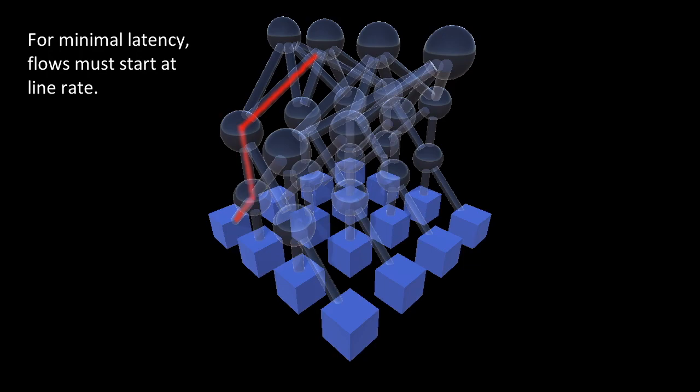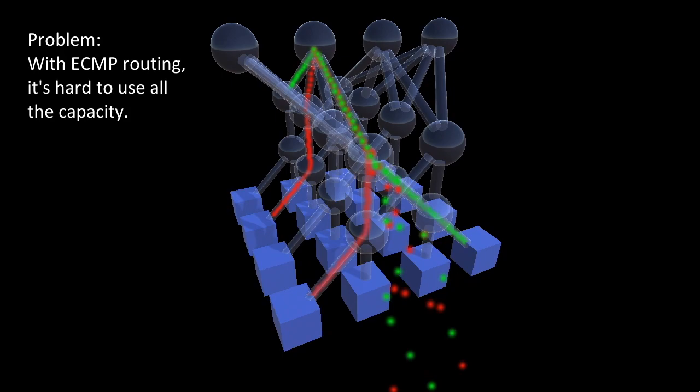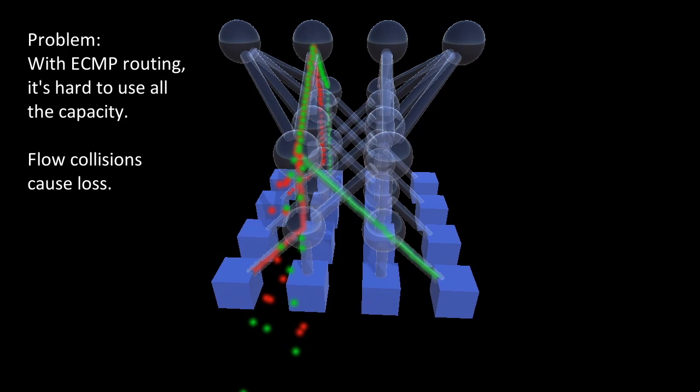Here's a flow that started at line rate. In principle at least, a clos topology has enough capacity for everyone to send to someone else at line rate. So the problem isn't lack of capacity. The problem is how we route flows. If you just do per flow ECMP, you'll get flow collisions, lots of packet loss, and really poor performance.